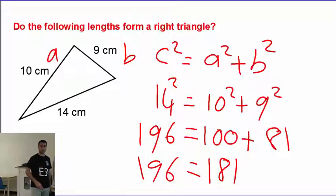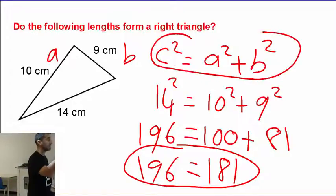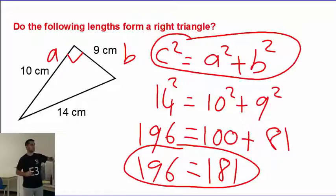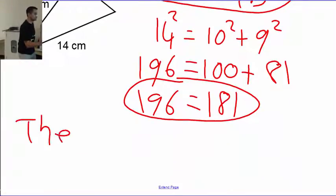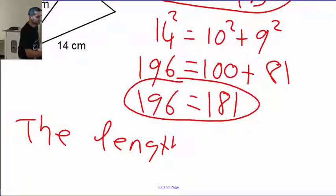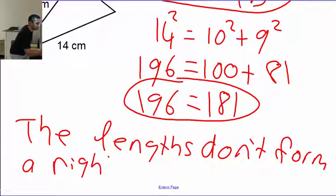So, 196 equals 181 doesn't make sense. They are not equal to each other. So, the Pythagorean theorem did not work here. So, I know this is not a right triangle. There is not supposed to be a square here because that is not a right triangle. So, this is a word question. So, let's spell that: the lengths don't form a right triangle.